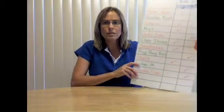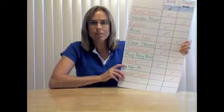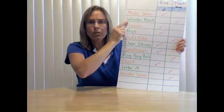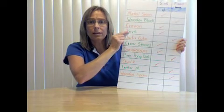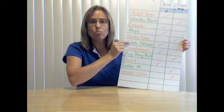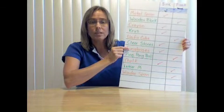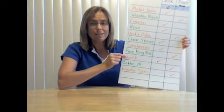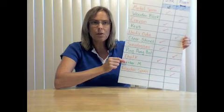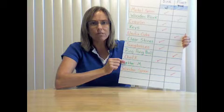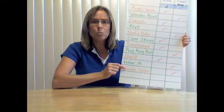Let's move back to our chart and check our results. As you can see, the metal spoon sank. The wooden block floated. The crayon sank. The keys sank. The unifix cube floated. The clear stones sank. The sunglasses sank. The ping pong ball floated. The chalk sank. The letter M, even though it went down some, it still floated a little bit, so I marked it in the floated column. And the wooden spoon floated.